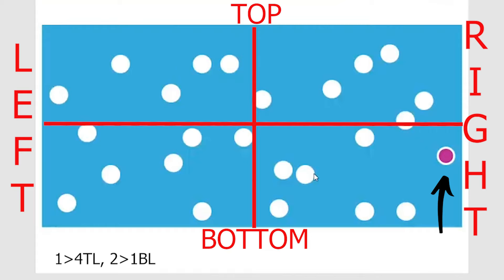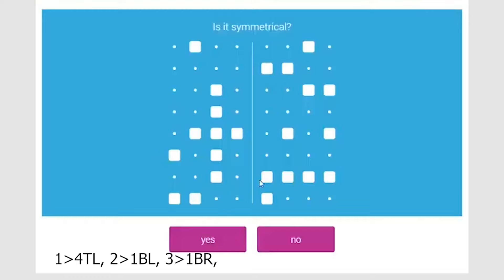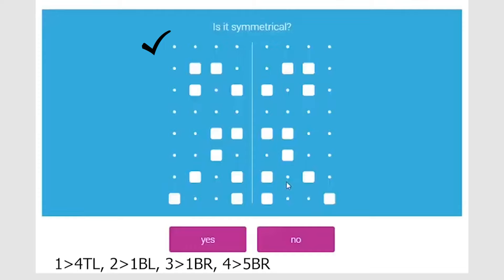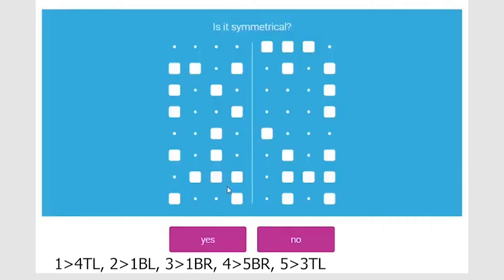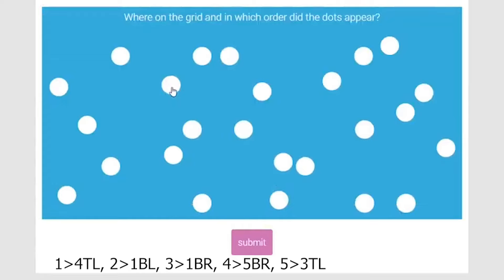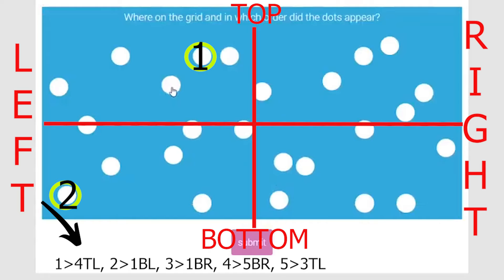Next memory question: dot at first position, bottom right. Spatial question — first line is symmetrical, second line is not, so the image is not symmetrical. Even one non-symmetrical line means no. Next dot: fifth position, bottom right. Another memory: dot in top left quadrant, third position — '3TL.' Spatial: first line not symmetrical, so no. Final selection: first dot at 4TL, second at 1BL, third at 1BR, fourth at 5BR, fifth at 3TL.